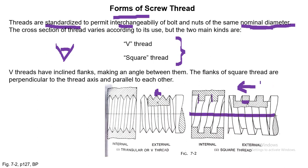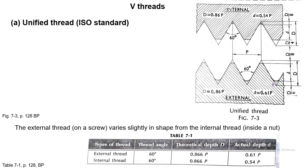Now let's go through some standard types of threads. The first is the unified thread or ISO standard — also known as the metric thread. It is basically a V-type thread with some rounding. The internal thread is on the nut and the external thread is on the bolt. For both, rounding is done but the amount differs. The flank angle is 60 degrees. Using the fundamental triangle depth D and pitch P, all other dimensions can be calculated.